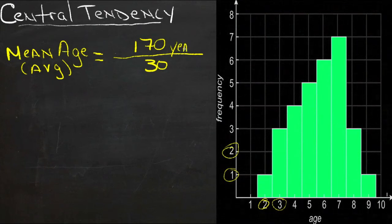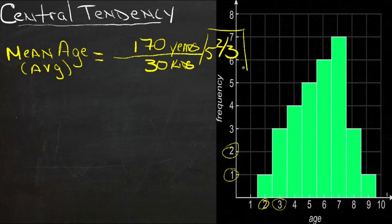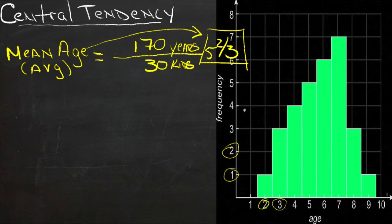So 170 years divided among 30 kids. 170 divided by 30 is about 5 and 2 thirds. So 5 and 2 thirds is the mean age, or the average age, of the kids that came to the face painting table.